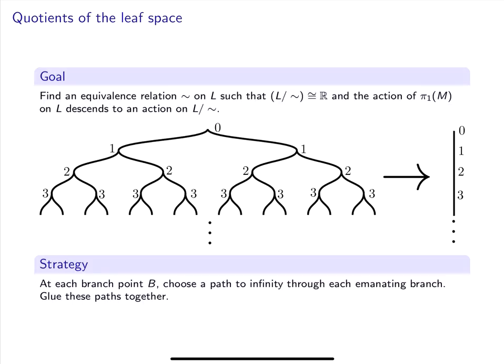Let me now try to survey this strategy of proof. As an analogy, let's think of the leaf space as an infinite rooted binary tree. We want to crush this tree down to a copy of ℝ. Our strategy is that at each branch point, we're going to choose a path to infinity through each emanating branch and glue these paths together. So, for example, at this point, I'll choose a blue path to infinity and a red path to infinity.